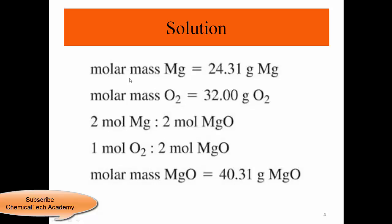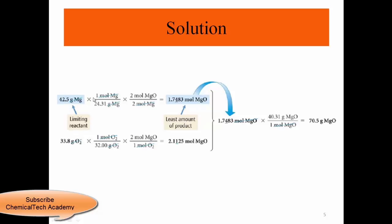The molar mass of MgO is 40.31 g/mol. Using the available amount of magnesium, dividing by its atomic mass and applying the molar ratio, we get 1.7483 moles of MgO. On the other hand, for oxygen, dividing by atomic mass and applying the molar ratio, we can estimate how much MgO we can produce from oxygen.